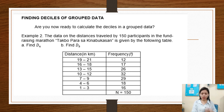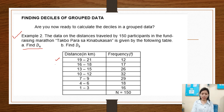Finding decile of group data. Are you now ready to calculate the decile in a group data? We have here the example. The data on the distances traveled by 150 participants in the fundraising marathon Takbo para sa kinabukasan is given by the following table. We have to find decile 4. The distance in kilometers ranges: 19 to 21, 16 to 18, 13 to 15, 10 to 12, 7 to 9, 4 to 6, and 1 to 3.